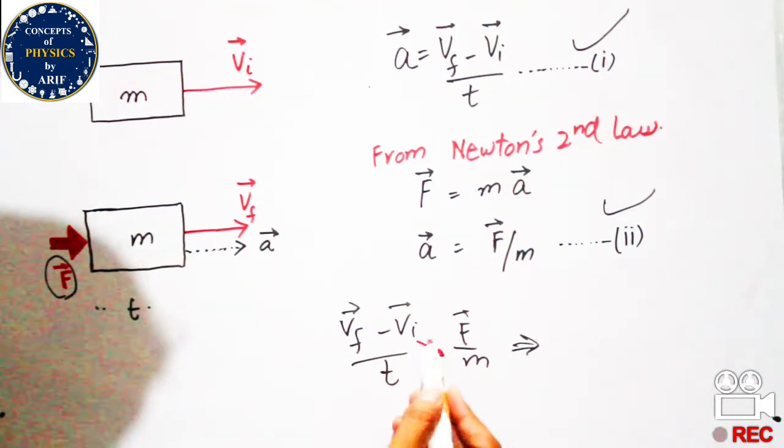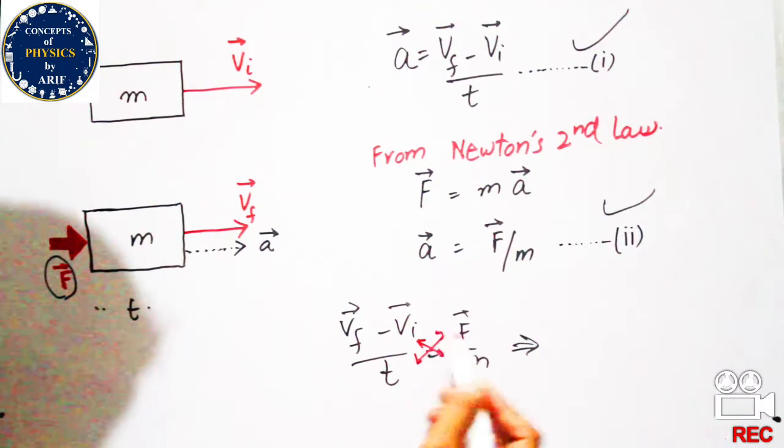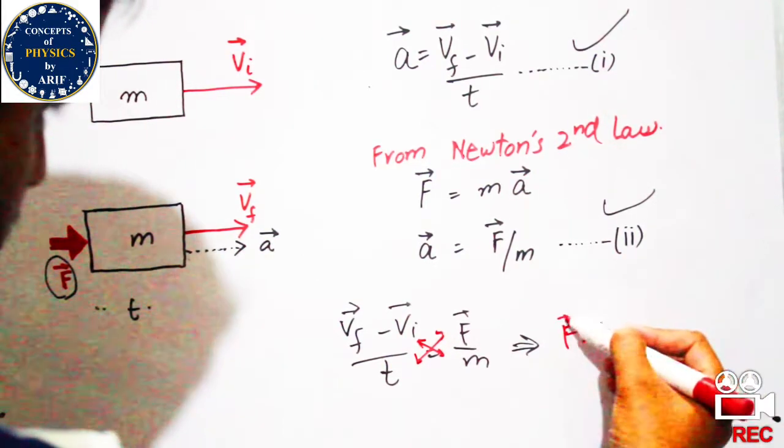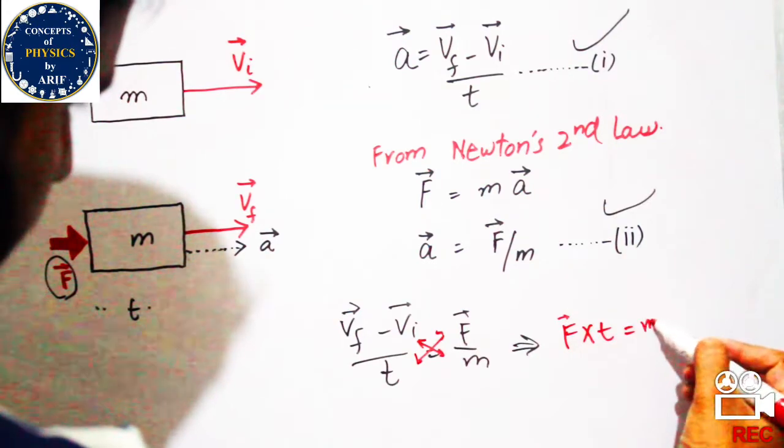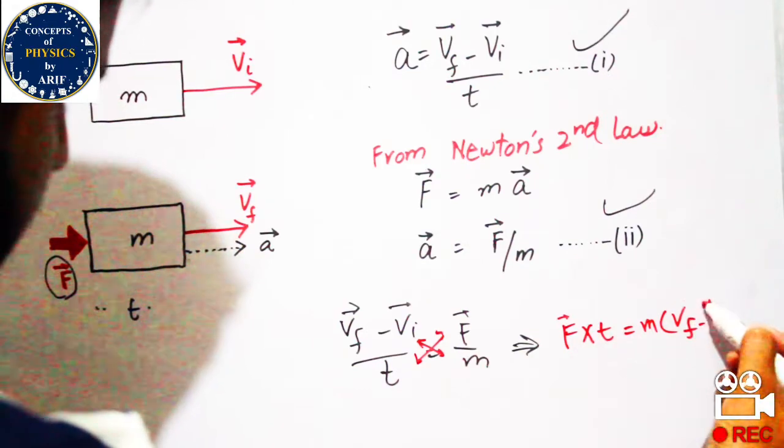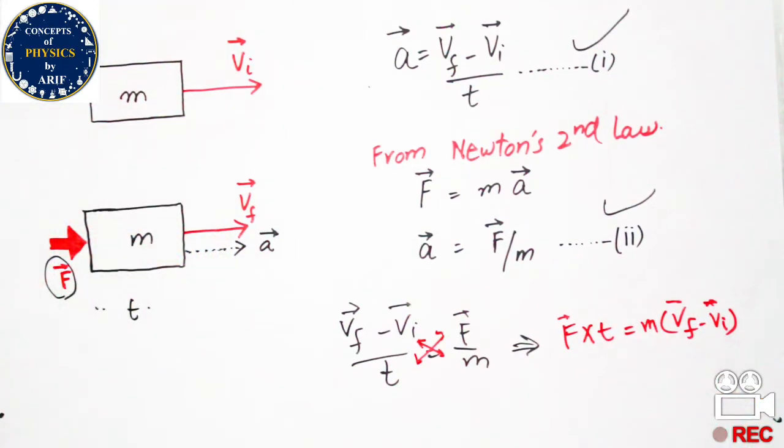After cross multiplication, it will become F×t = m(vf - vi), and it will become F×t = mvf - mvi.